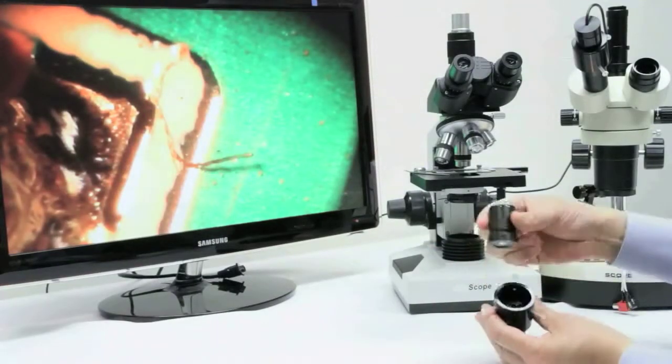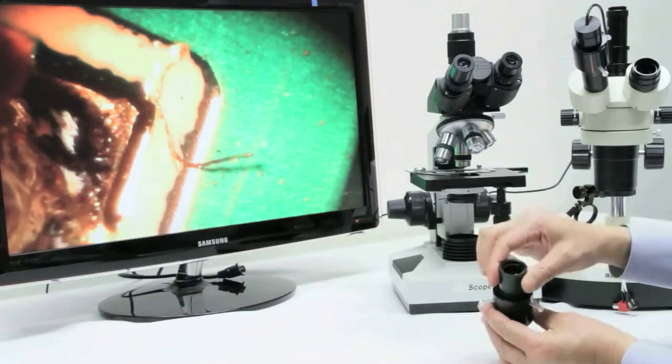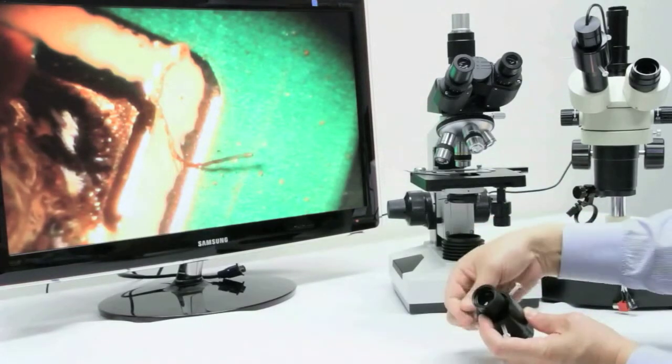This model has 3 fitment screws that protrude from its body. You can fit your eyepiece inside and turn the screws to fit into place.